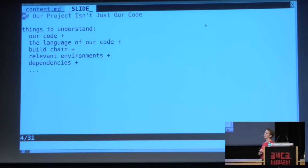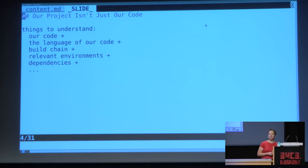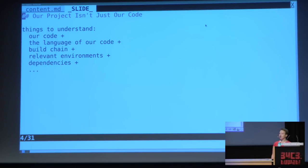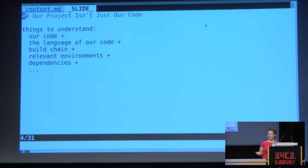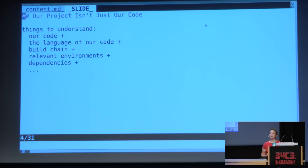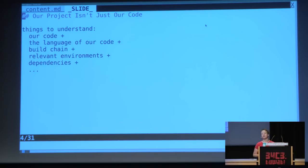A way that we can help people be knowledgeable and competent in the context of our project is to make our project easier to understand. But our project isn't just our code — we can do a ton of refactoring, use best practices, document everything, use nice language features — but we also have to think about the language our code is written in, how we interact with it day to day, how we build it, where we run it, and what things we need to actually use our code in a meaningful way.